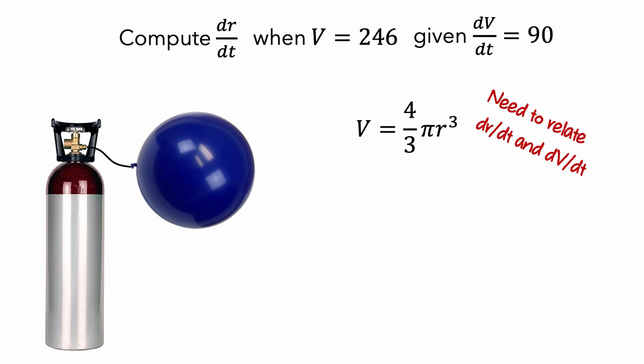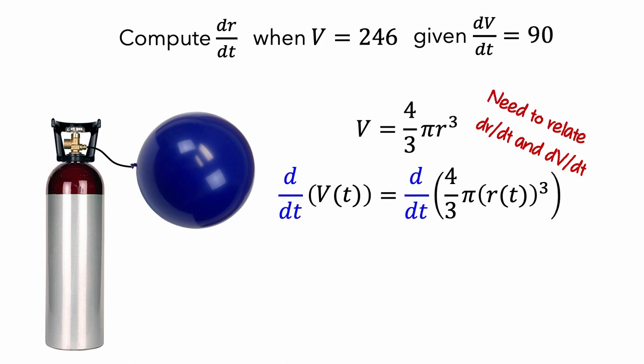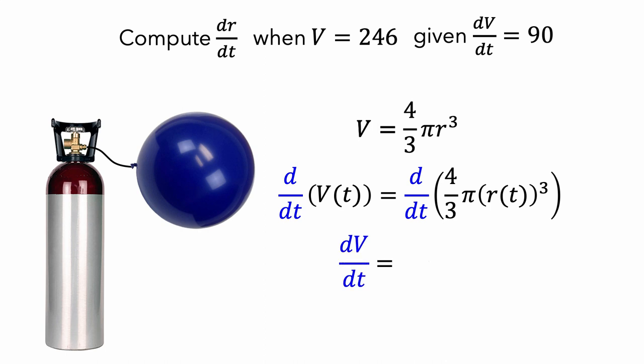The main idea is to think of v as a function of t, because as time increases, the volume is also increasing. Similarly, we can think of r as a function of t. Then we can take the derivative of each side of the equation. On the left side of the equation, the derivative of v of t is just dv/dt.